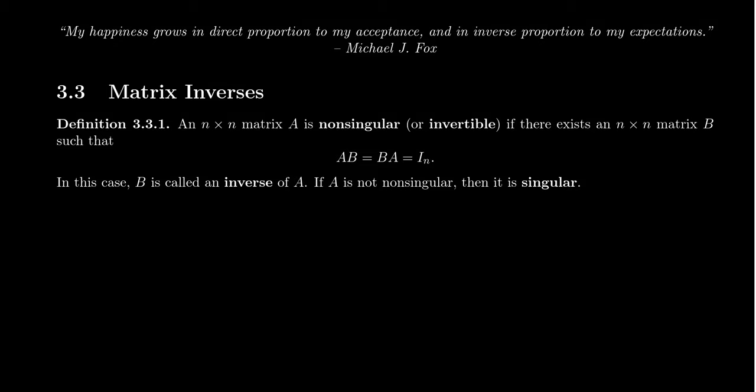This leads to our definition. An n-by-n matrix is called non-singular, or sometimes it's called invertible. We say that a matrix is non-singular if there exists some other matrix, say B, such that A times B is equal to B times A. I'm not saying that A commutes with every matrix, but it will commute with this matrix B because A times B and B times A will equal the n-by-n identity matrix, and we call B an inverse of the matrix A.